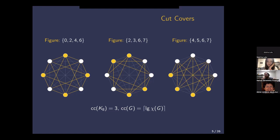It is actually the case that this is the best possible cut cover for the complete graph on eight vertices. The best cut cover you can get on any graph G is the ceiling of the log of the chromatic number of G. This equality tells you that the best you can do is color your graph and then do this bit trick.